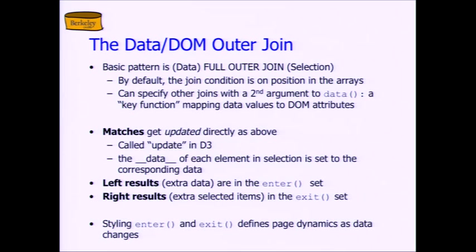It's kind of a hack, if you think about it — maybe you already had something called __data__, in which case I don't actually know what happens. But the beauty of D3 is they decided to meet the web with the syntax the web has — HTML and CSS — and this is where they put the join outputs. They hang them in the DOM tree as text. Left results are in the enter set in JavaScript. Right results are in the exit set in JavaScript. And then by styling an enter and exit, you get to define the page dynamics, and that's where the fun comes.